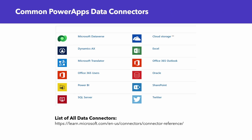There are over 600 data connectors that can be mixed and matched to bring data into the application. Some common ones include Office 365, Oracle, and Excel. To see the full list of data connectors, you can go to the website at the bottom of the slide to see what you can connect to Power Apps as data sources.